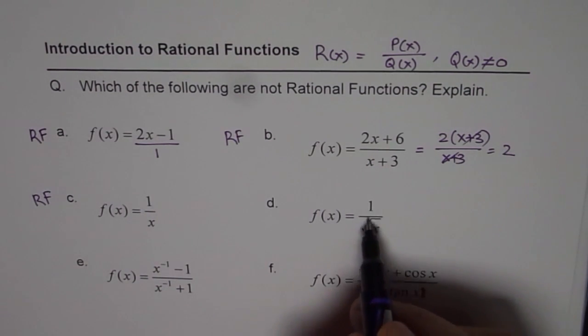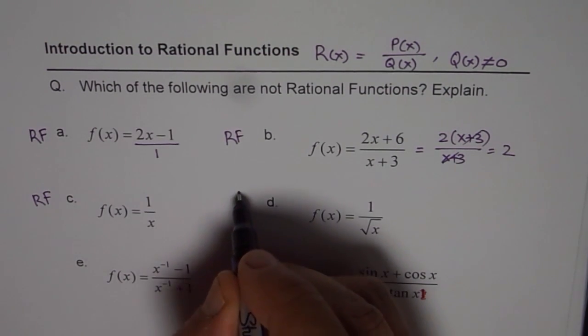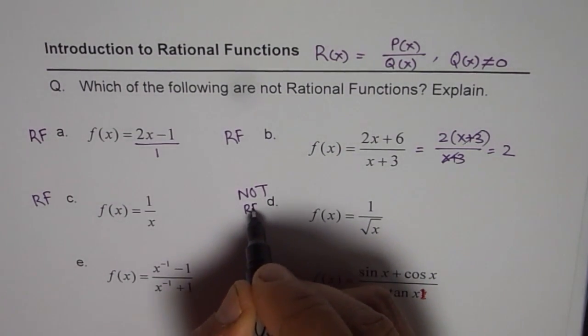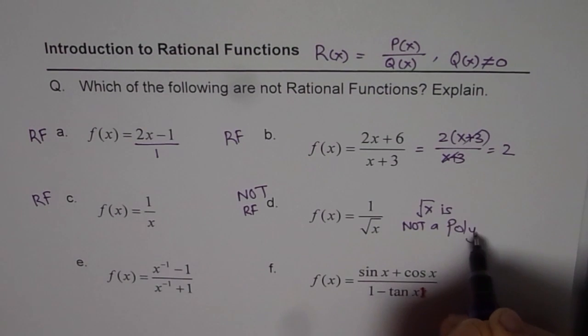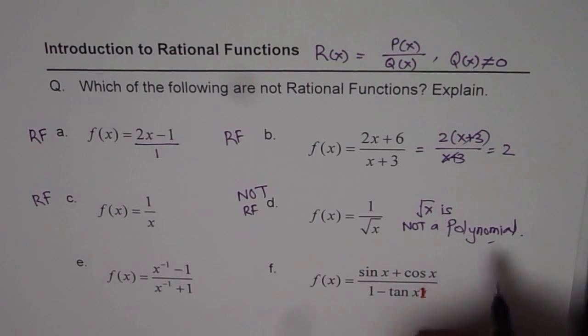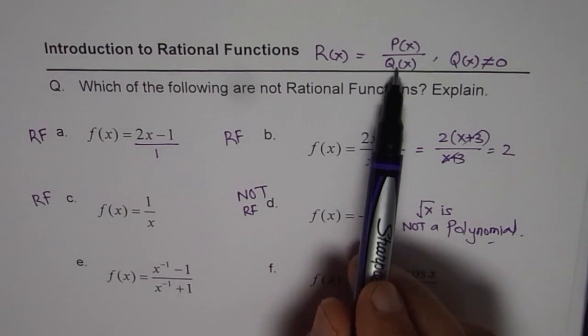Now we have this one, which is 1 over square root of x. Is it a rational function? The answer is, it is not a rational function. Reason is, that square root x is not a polynomial. It could be treated as a reciprocal function. We will talk about that in coming videos. But it is not a rational function, since square root x is not a polynomial. Remember, rational function is ratio of polynomials.